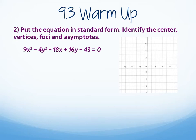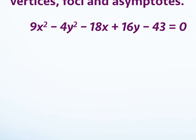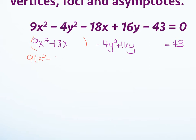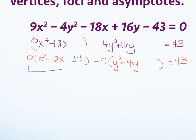To put the equation into standard form, identify the center, vertices, foci, and asymptotes. I've got to get this into standard form by completing the square. I'll group: 9x squared minus 18x, and negative 4y squared plus 16y, and bump the 43 to the other side. Factor out the 9 and the negative 4 carefully — that's a common mistake. Take half the coefficient, square it, and add it inside, remembering to multiply by the factored constant before adding to the other side.